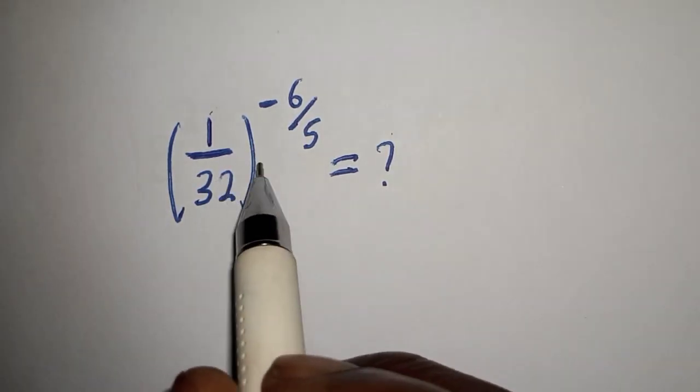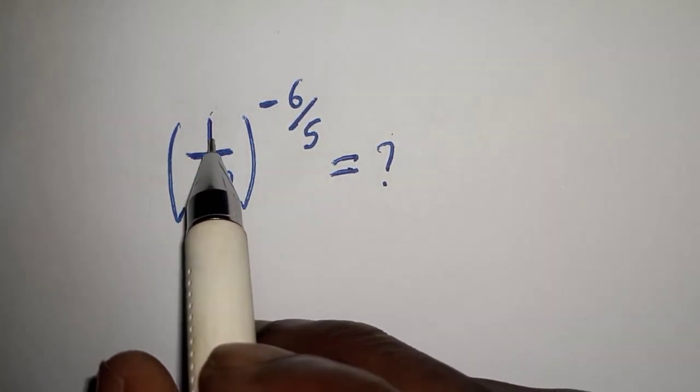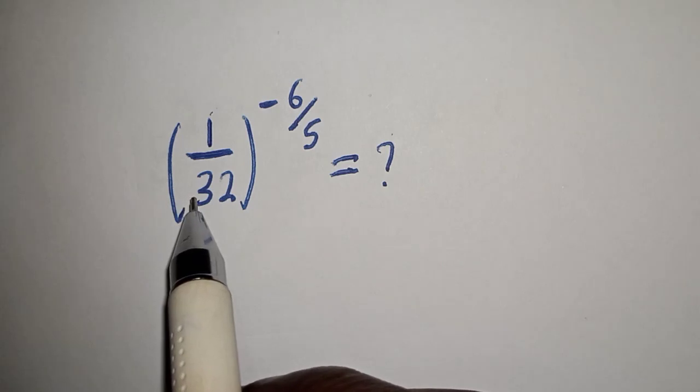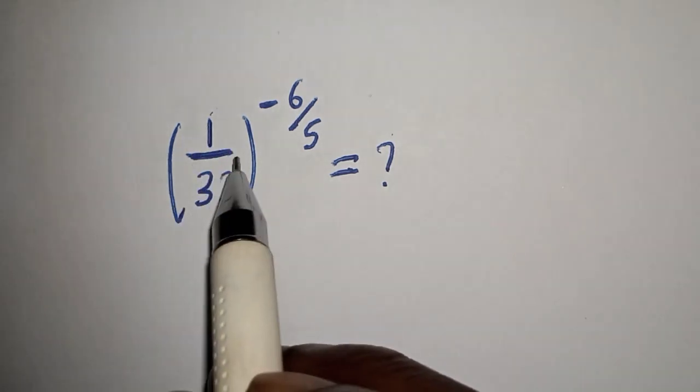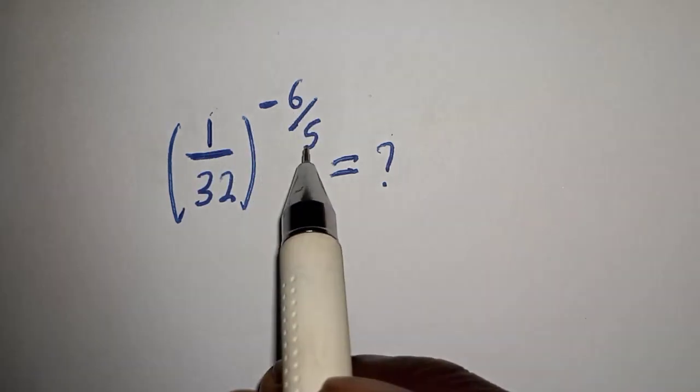Hello, how to simplify this math problem without using a calculator: 1 divided by 32 to the power of minus 6 over 5 equals what?